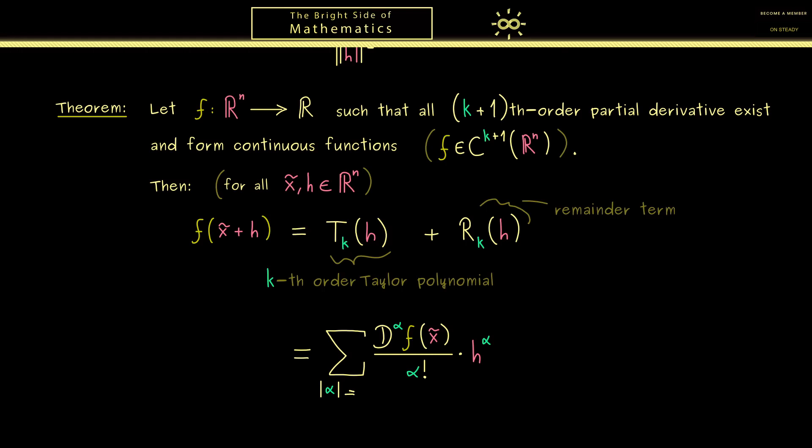And now we simply have to add that we sum over all multi-indices α, where the absolute value of α is less or equal than k. This means the highest order here is indeed just k. Ok, there we have it, you see, this is the definition of the Taylor polynomial of the kth order.